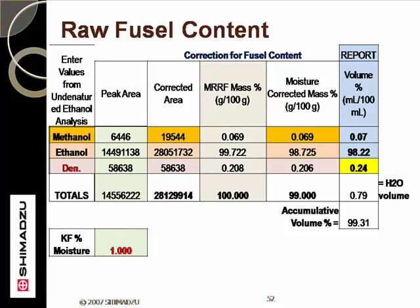The calculation of the raw fusel contribution is performed in much the same manner as for the denatured sample. In this respect, the fusel content contributes 0.24% toward the total 3.5% in the crude denatured value.